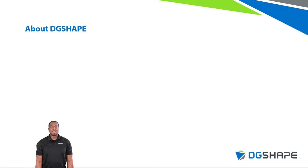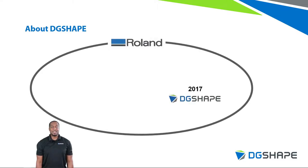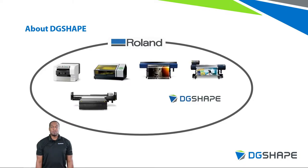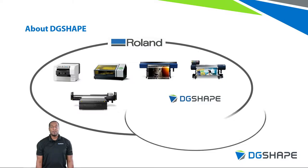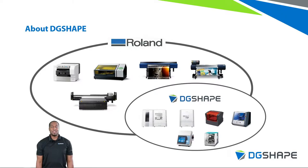Before we begin our session, some of you may be new to the DG Shape line of products, and there may be a bit of confusion between DG Shape and Roland branding. Back in 2017, DG Shape became an official subsidiary under the Roland Corporation, with an emphasis on expanding Roland's 3D line of products. Today, the Roland Corporation continues to manufacture and distribute high-quality printing devices, whereas DG Shape manufactures and distributes high-quality 3D milling devices and impact and laser printers.